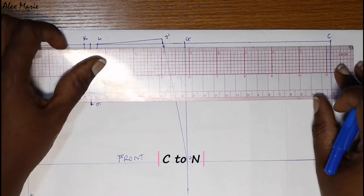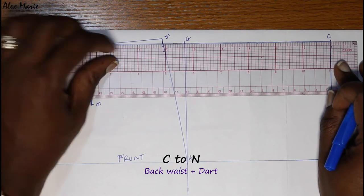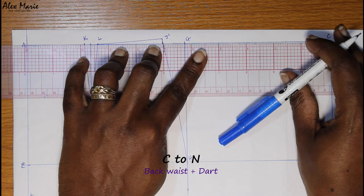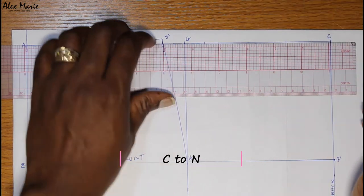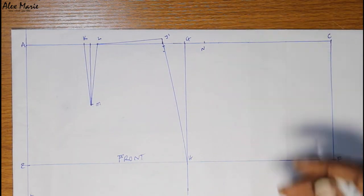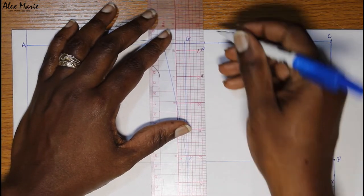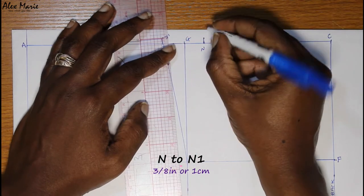So the back, we're going to do the same thing. We're going to put in our back waist plus dart, C to N. From N, square up three-eighths of an inch or one centimeter. This could be a quarter of an inch, it could be half an inch.